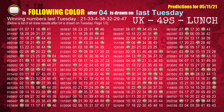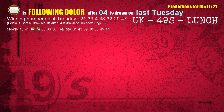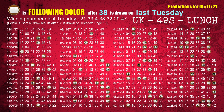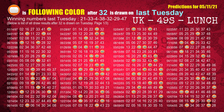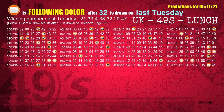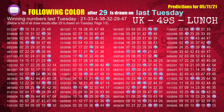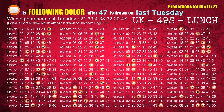The fourth winning number last Tuesday is 32. The most frequently following color is orange when 32 is the winning number on last Tuesday. The sixth winning number last Tuesday is 29; the most frequently following color is purple when 29 is the winning number on last Tuesday. The booster winning number last Tuesday is 47; the most frequently following color is orange when 47 is the winning number on last Tuesday.